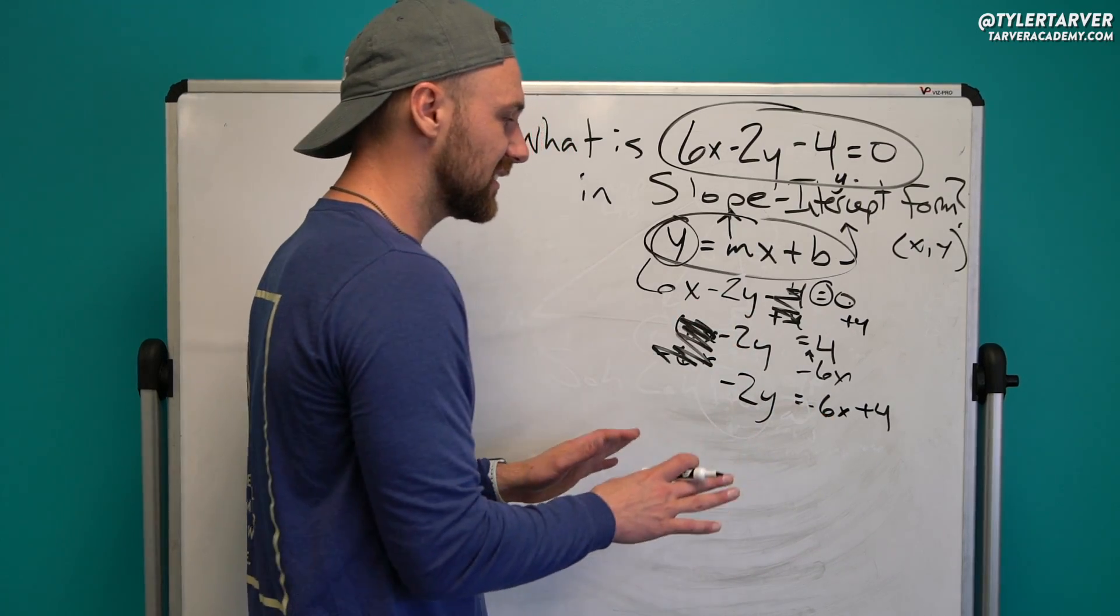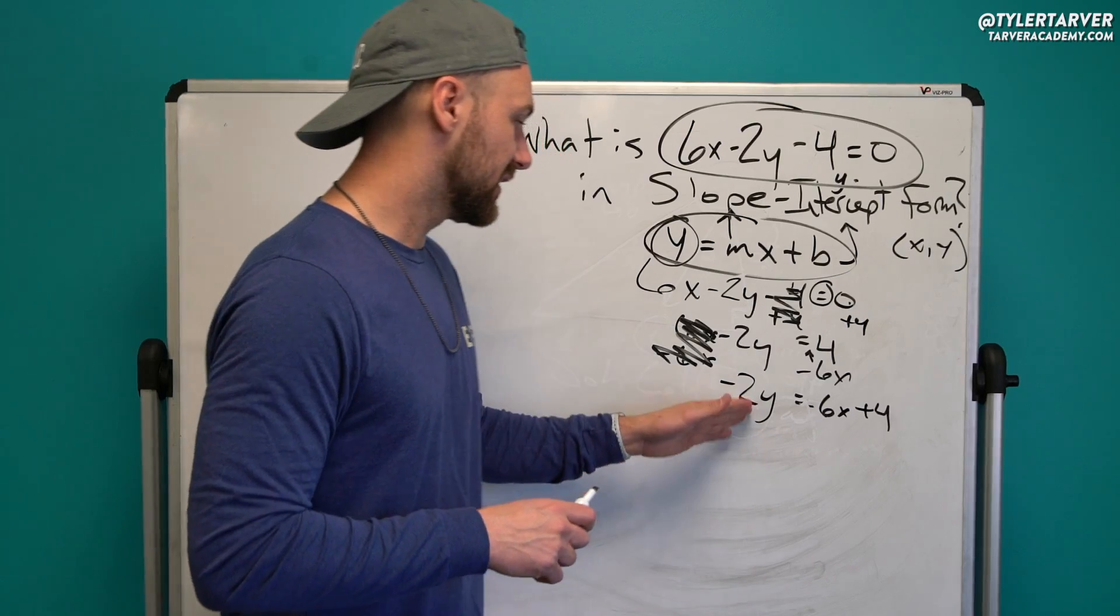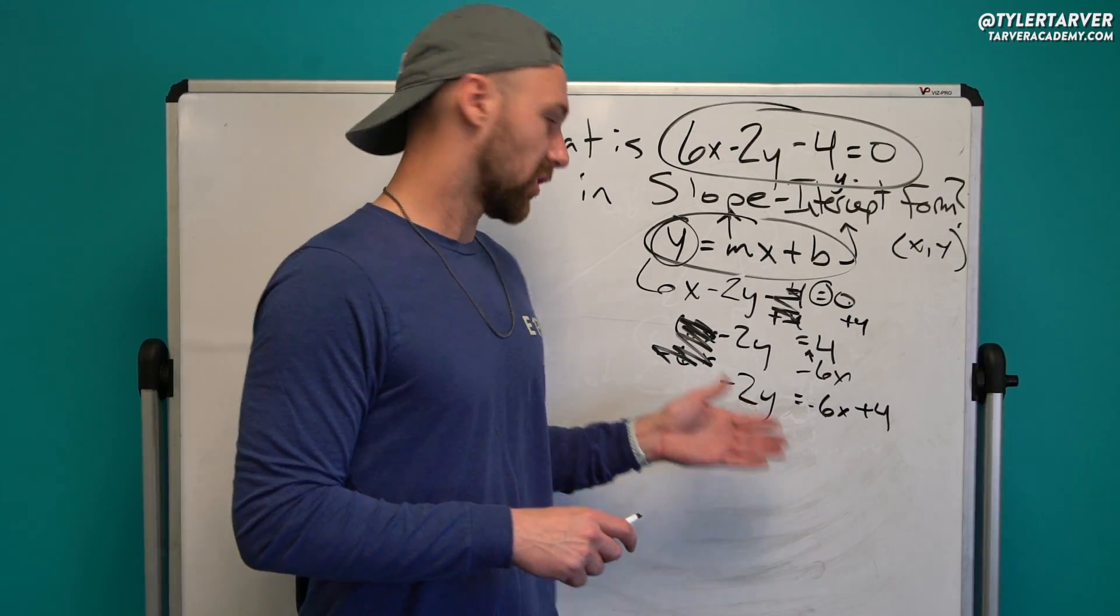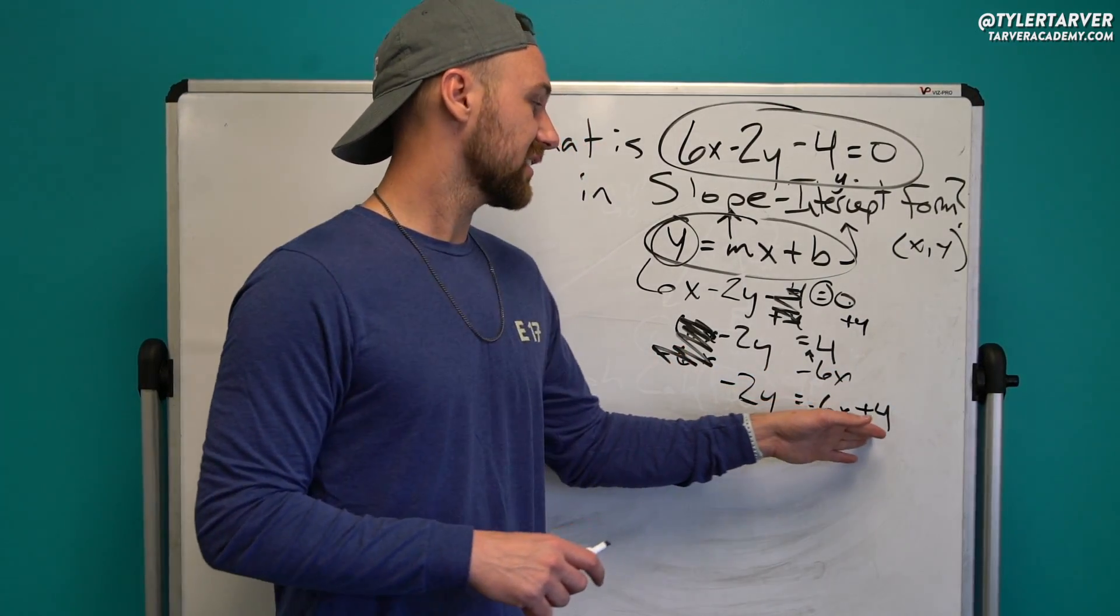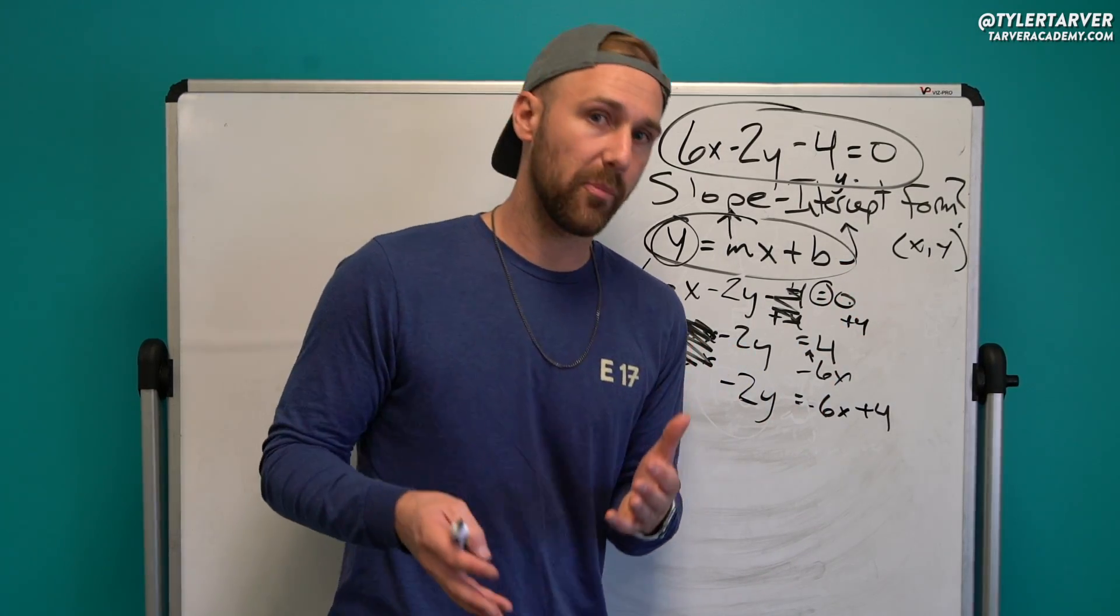So last step, I need to get rid of the negative 2. The first thing a lot of students want to do is they're like, okay, well it's minus 2, so I'll just add 2 over there. It's negative 6x plus 6 because I just added 2. If you did that, it's the wrong operation. It's okay, you didn't tell anybody, so nobody knows.